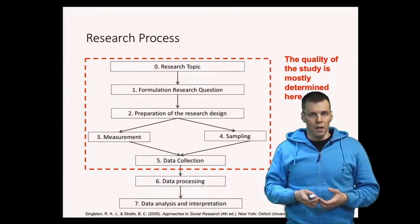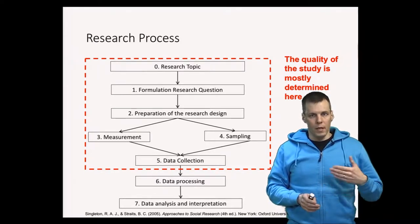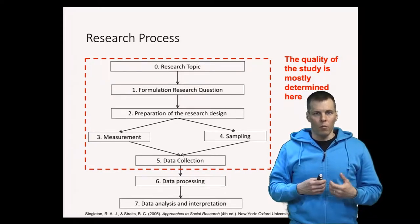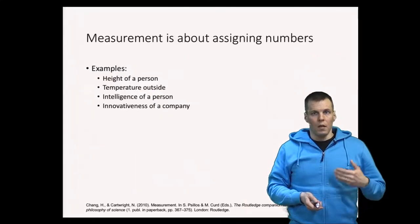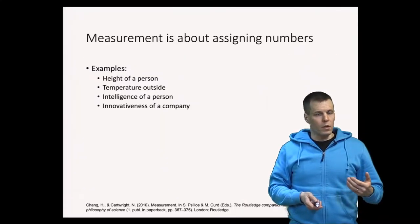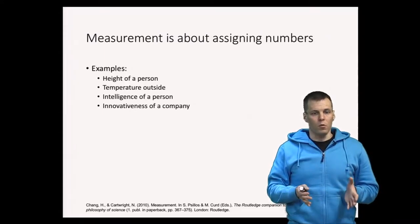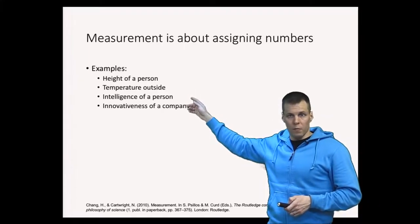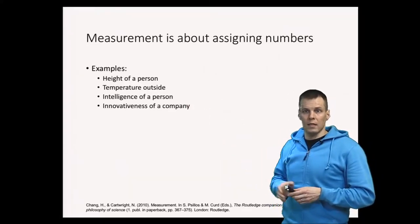When you have your data, the upper limit of the quality of the study is basically determined. If your measurement doesn't work or if your sample is somehow flawed, then no matter how complicated or sophisticated the analysis you apply to those poor data, your research output will not be very high. The idea of measurement is that we want to assign numbers to some quantities that we study — for example, heights of people, temperature outside, intelligence of people, or innovativeness of a company.